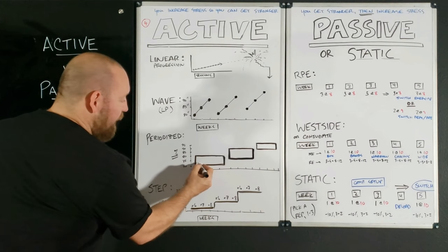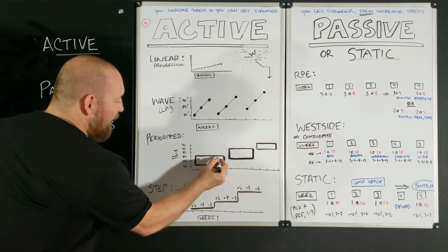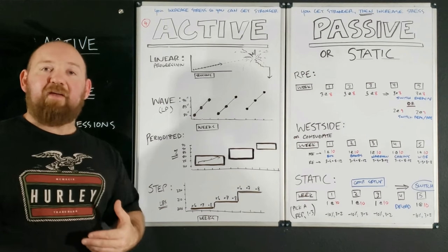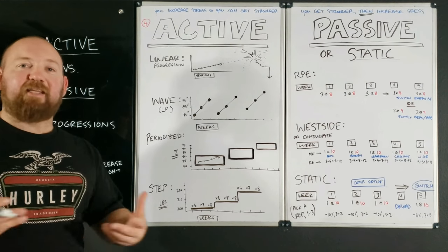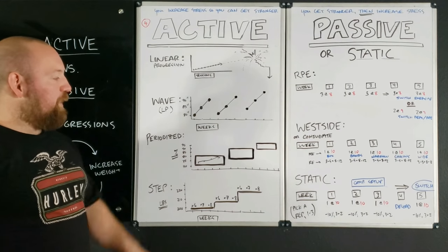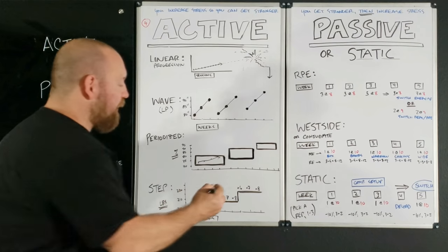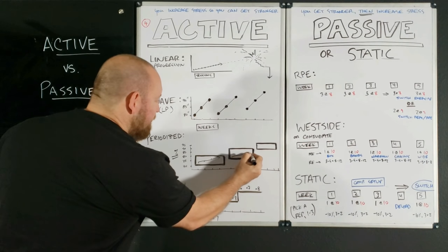Now, many of them do use a very almost linear active type of progression. So let's say you're doing triples. Over this block, you might want to see those triples go up. So you start a little light, you get heavier. Over three, four, five weeks, that's enough time to adapt. Then boom, you're done with the triples block, and you go into the next block, where maybe you start a little bit lighter, and you do the exact same thing.